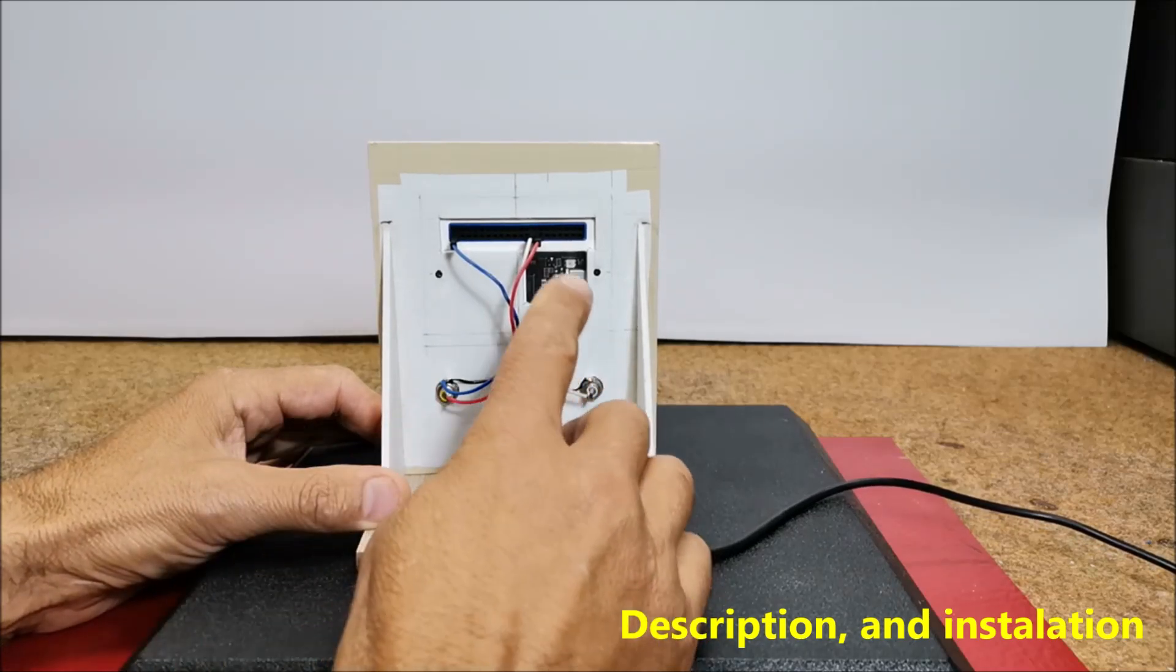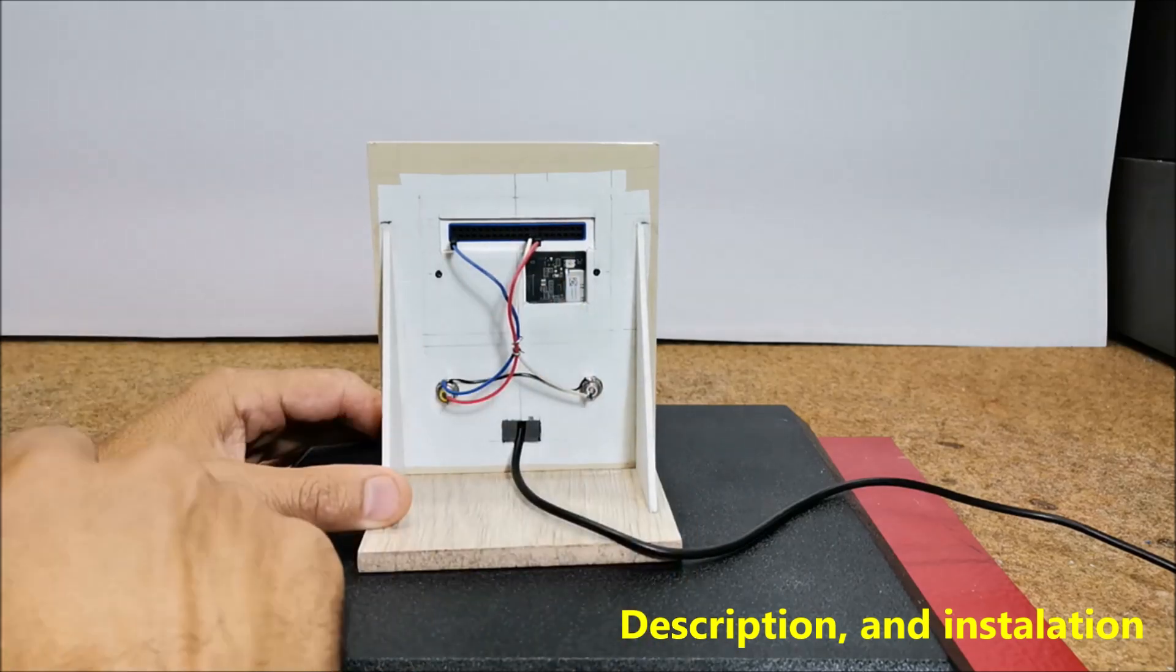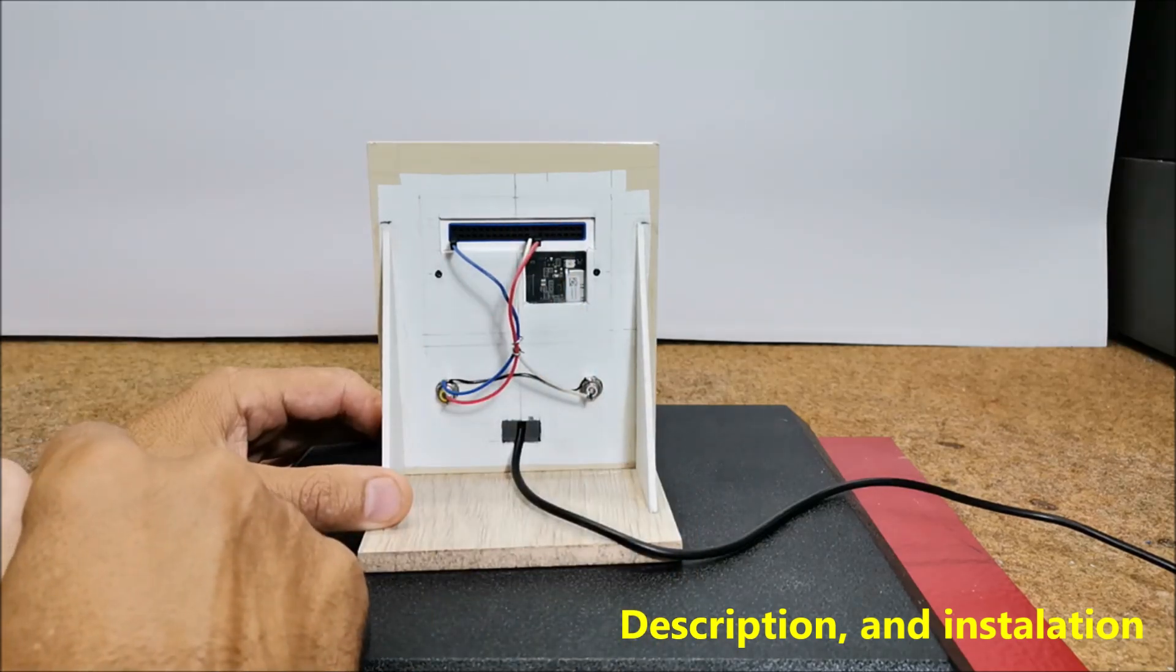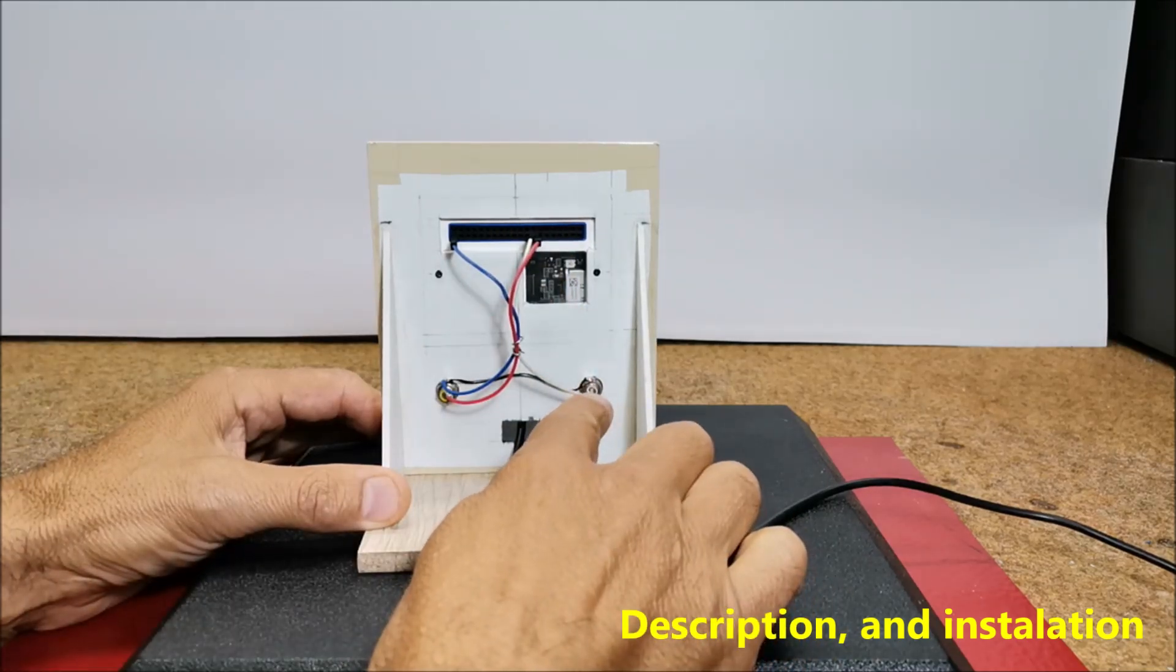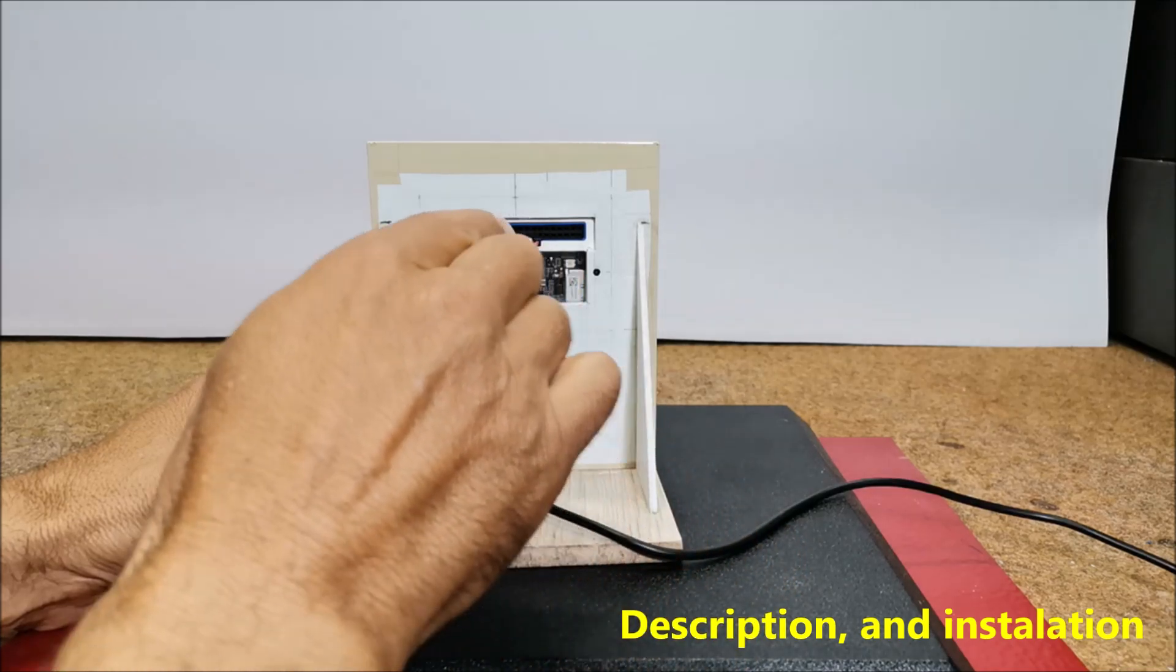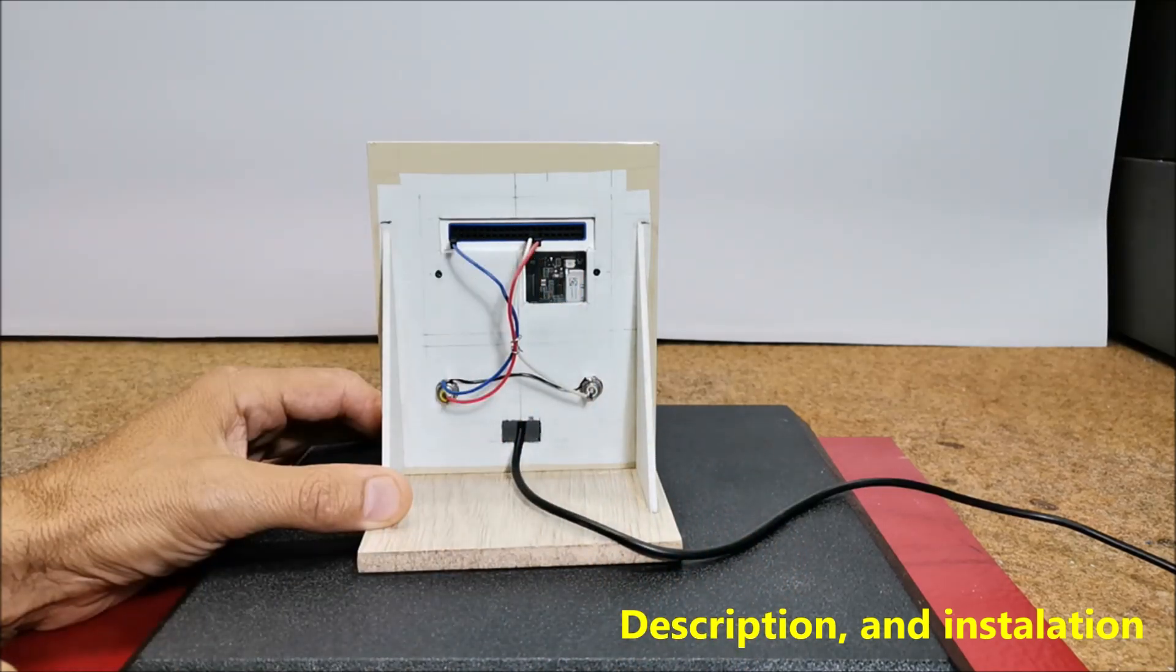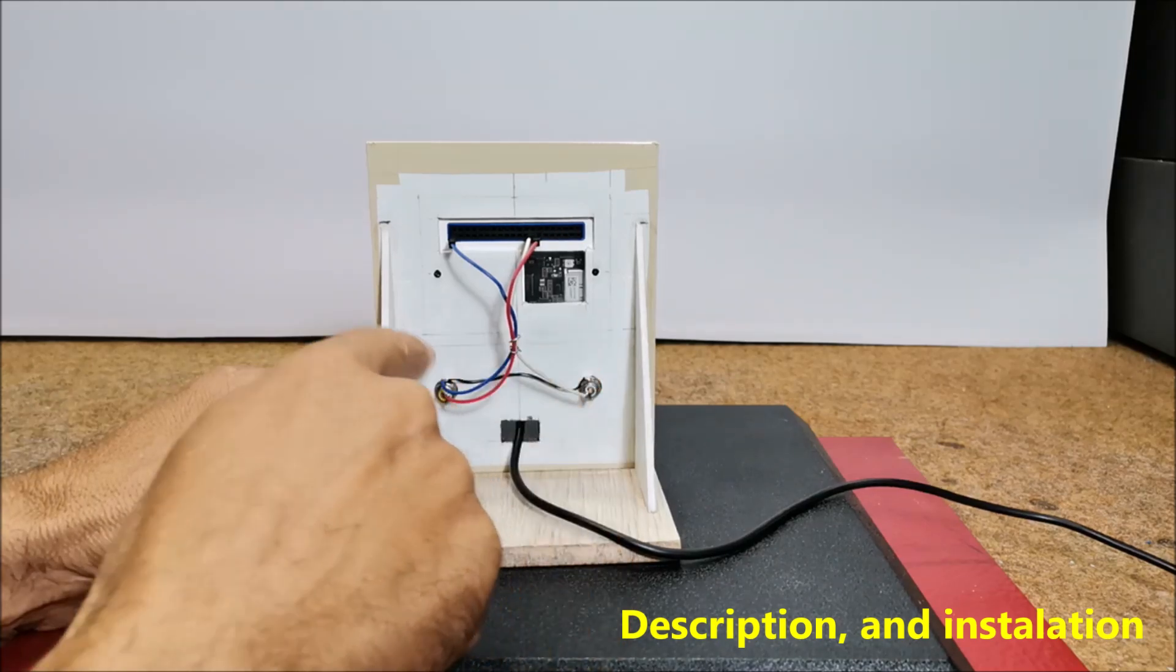Channel 1 is connected to pin 13 or A0 or BCM27 and Channel 2 is connected to pin 15 or A1 or BCM22 of WIO Terminal and Ground.